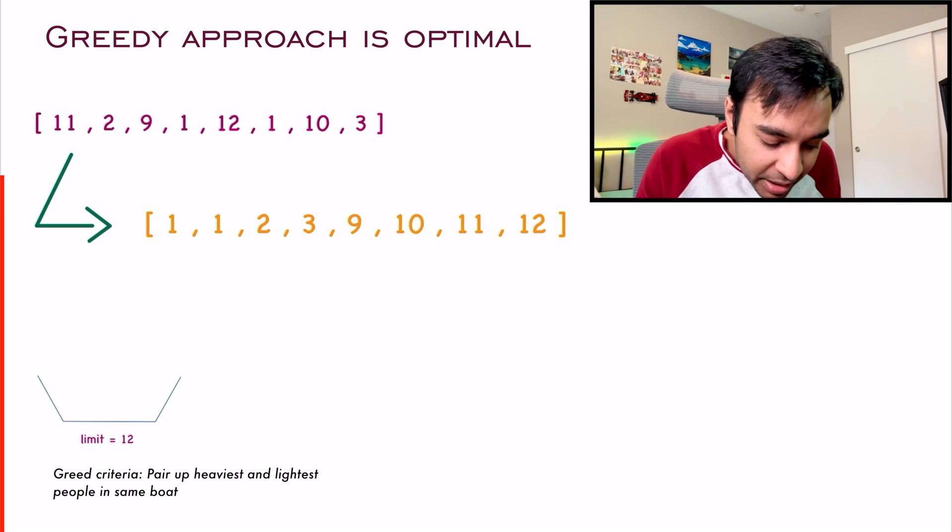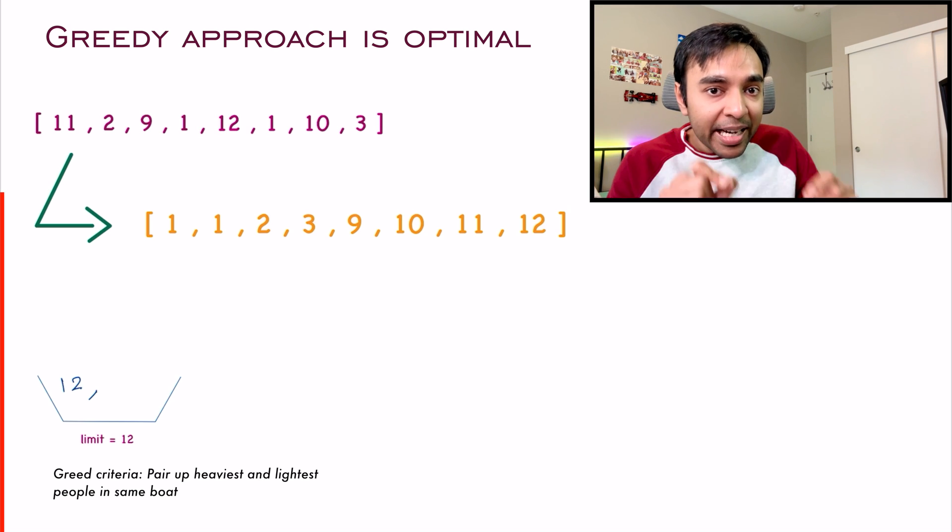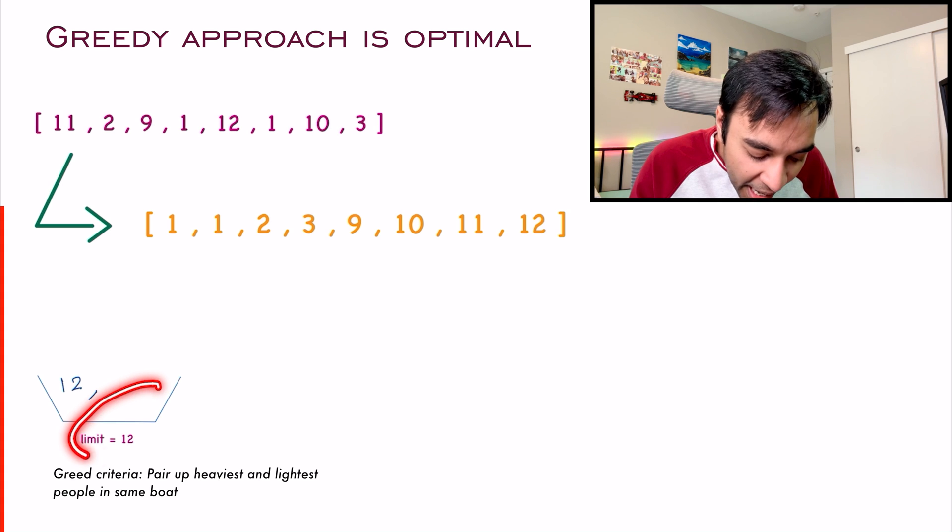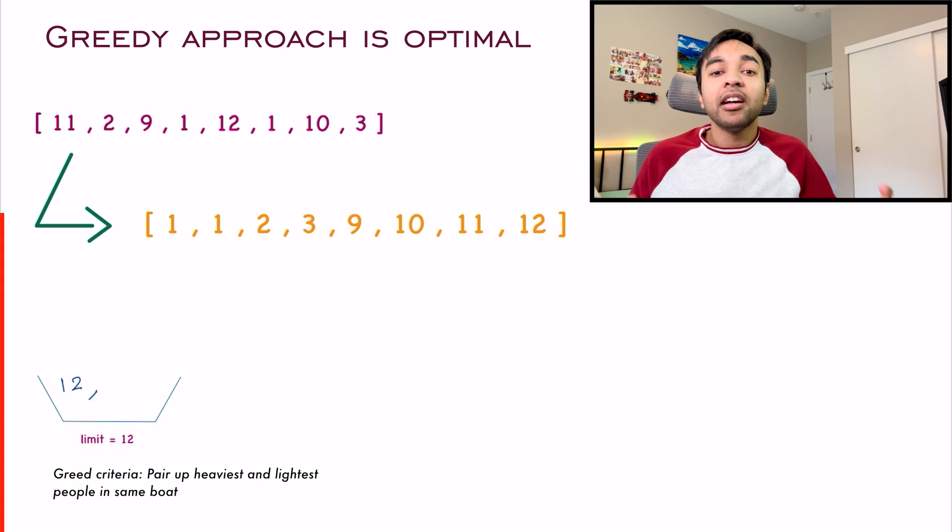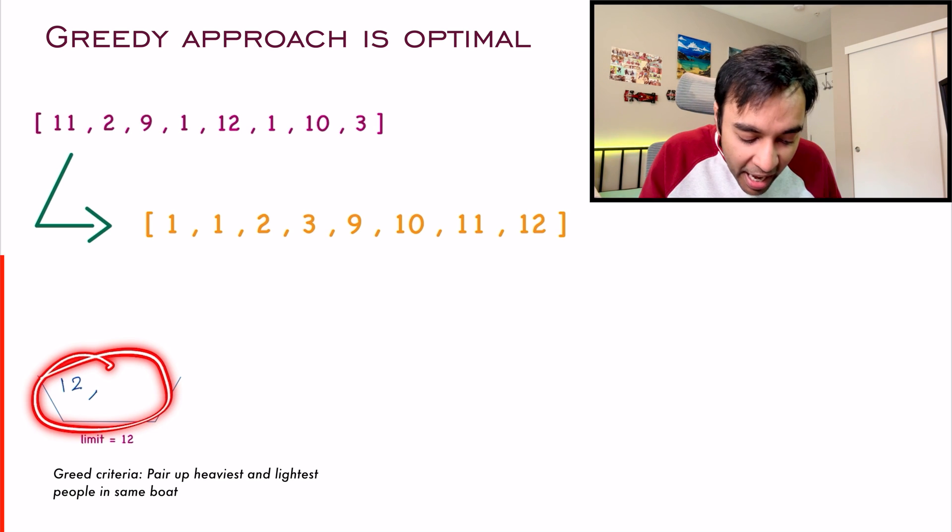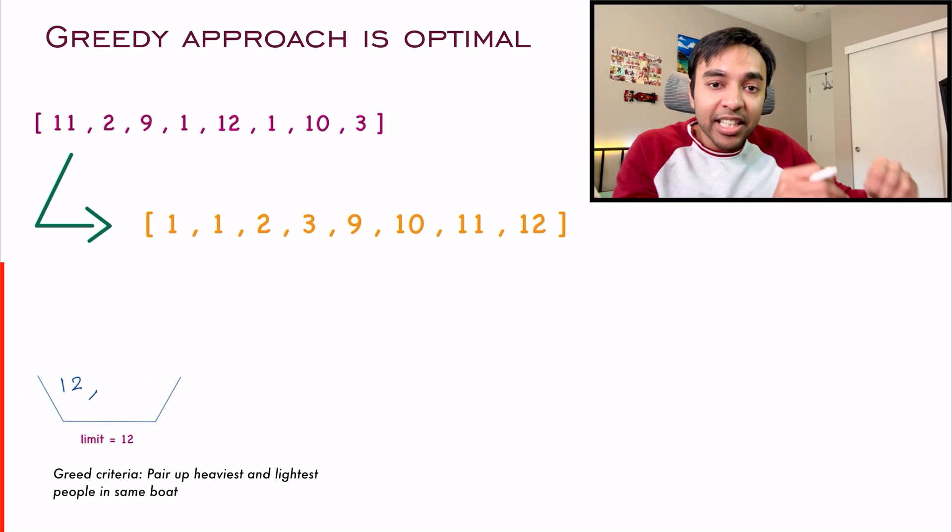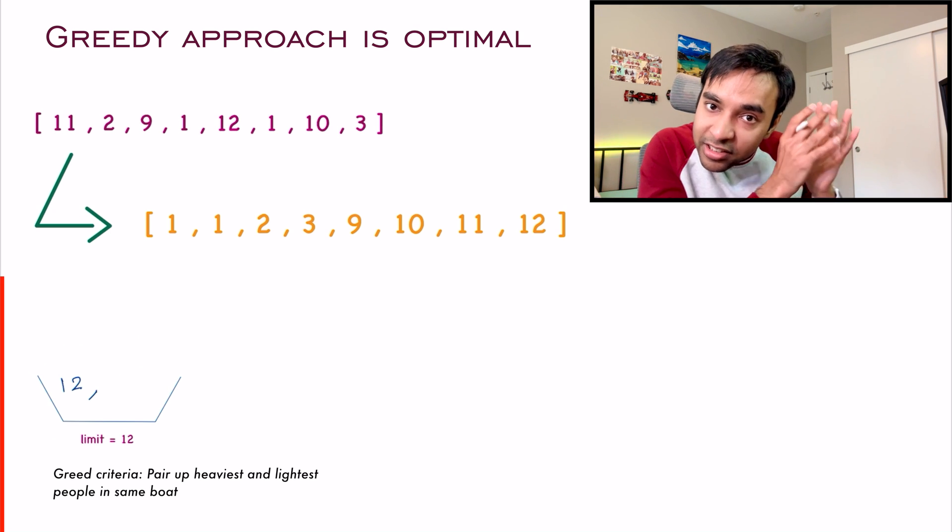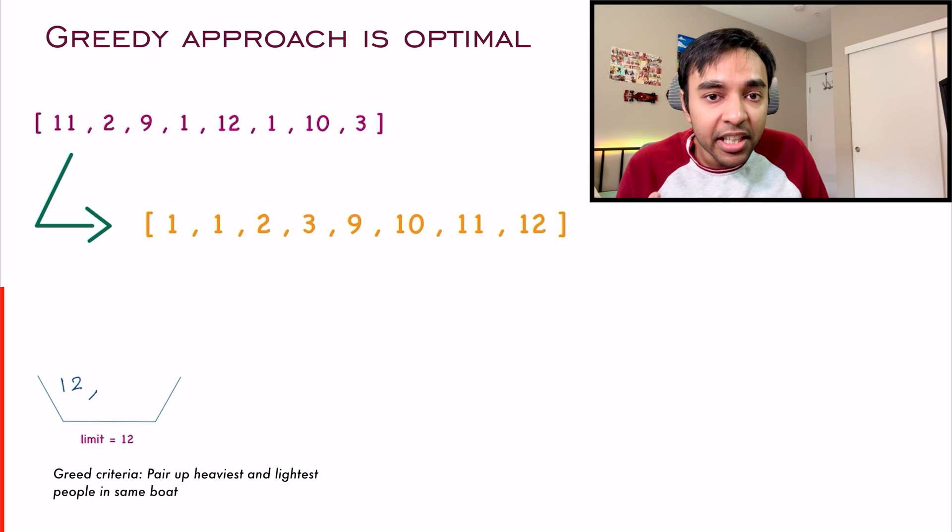What we can do is we can start off with the heaviest person. My heaviest person has a weight of 12 kg. I place him in the boat. As soon as I place him, then I check, hey, do I have any more capacity available? I do not have any more capacity. So this boat is now full. Just remember that this is the best case. It can never be possible that you can have any more person sitting with this 12 kg person. This has to always be there. This is where we are being greedy. We are starting off with the heaviest person possible.